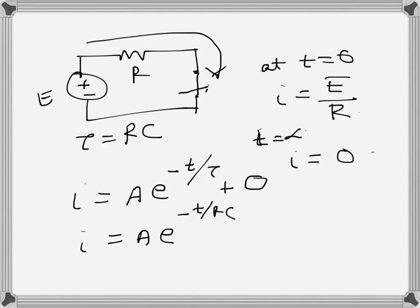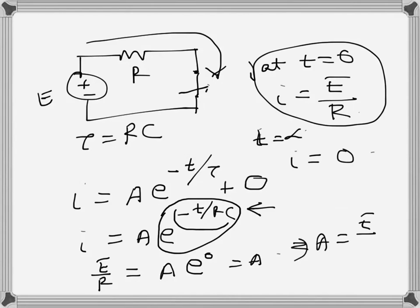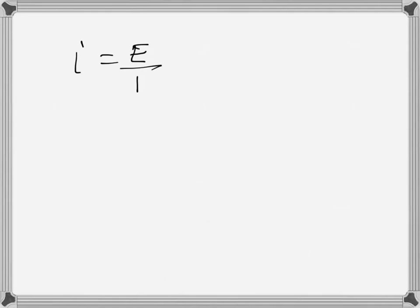At t equals zero, i equals E over R. Note: by mistake in the previous video I said the whole exponential term becomes zero, but actually only the power becomes zero, so e to the power zero equals one. That is why A remains, and therefore A equals E over R.